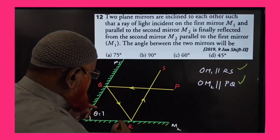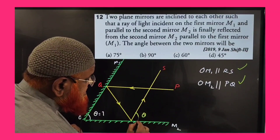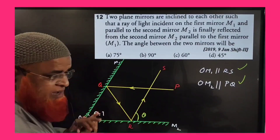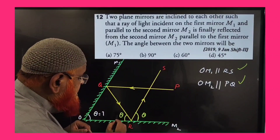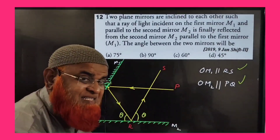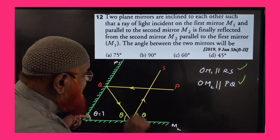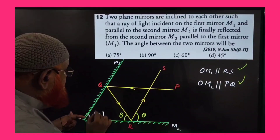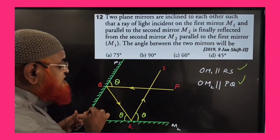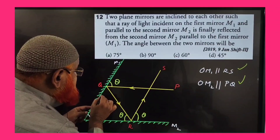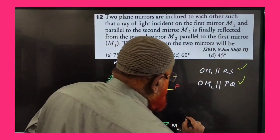Since these two lines are parallel, if this angle is theta, this is also going to be theta — these are corresponding angles. Similarly, if this is theta, this is also theta, because these two are called glancing angles. And again, since these two are parallel according to the problem, if this is theta, this is also going to be theta because of corresponding angles — these are also glancing angles.